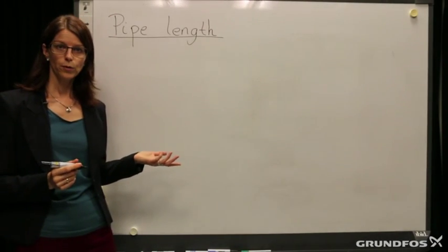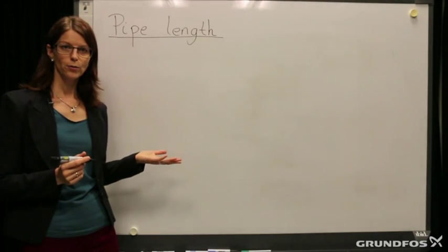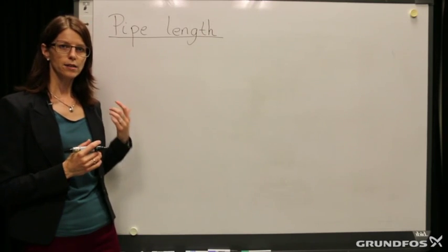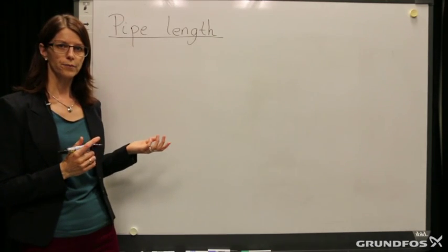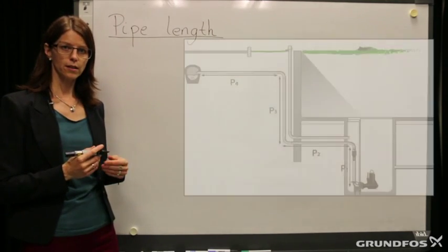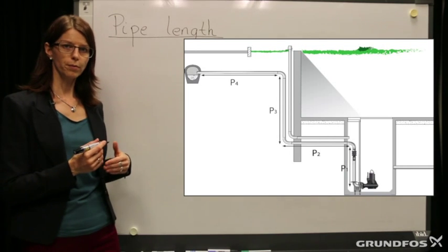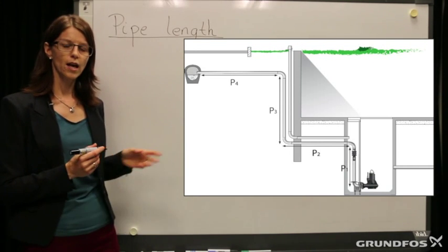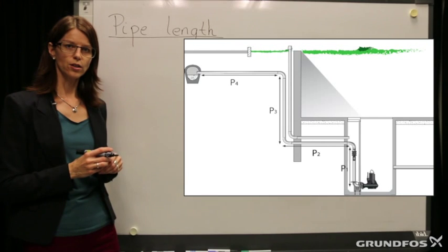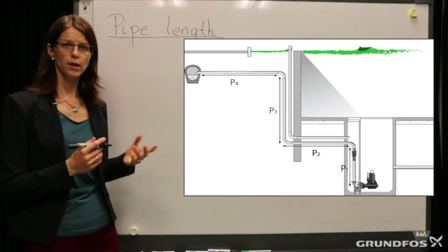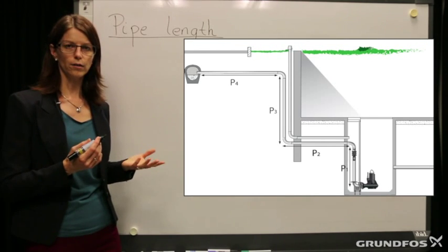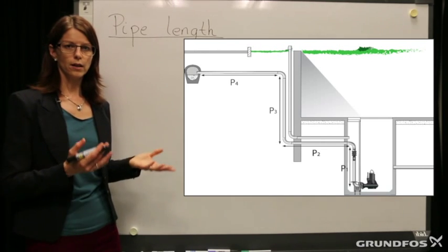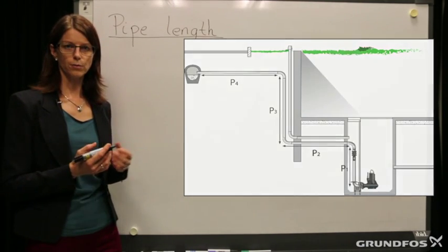The first thing we will talk about regarding the system curve and the dynamic head is the pipe length. The pipe length is the distance between the pump and the discharge — it could be the sewer mains, the rainwater mains, or a recipient.